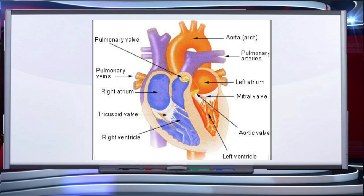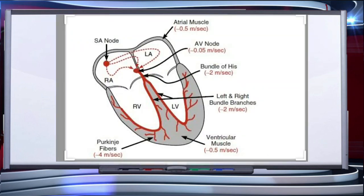The openings of the right and left ventricles into the pulmonary artery and the aorta respectively are provided with semilunar valves. The valves in the heart allow the flow of blood only in one direction — from the atrium to the ventricle, and from the ventricles to the pulmonary artery or aorta — preventing backward flow of blood. The entire heart is made up of cardiac muscles.